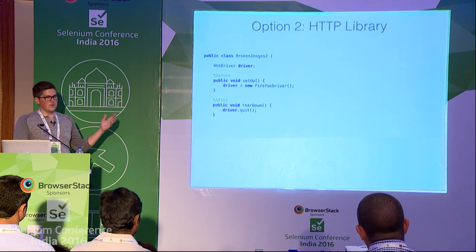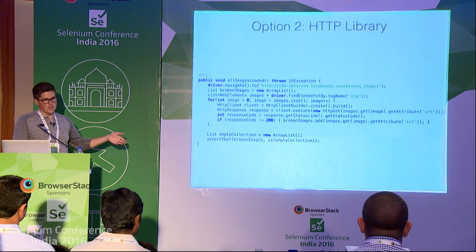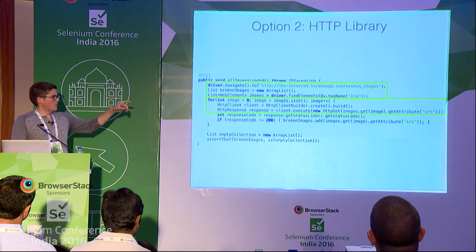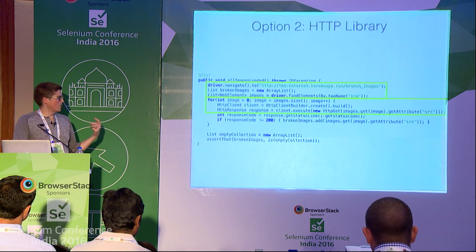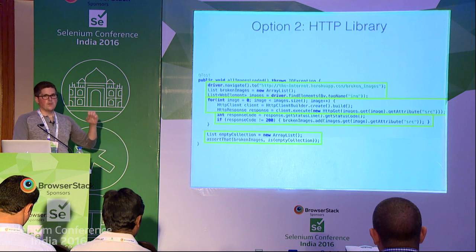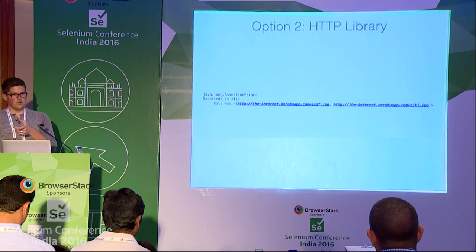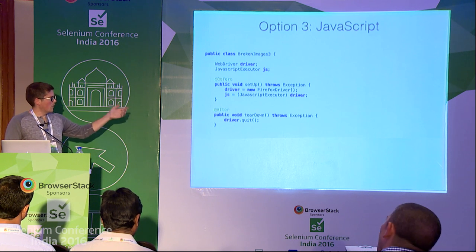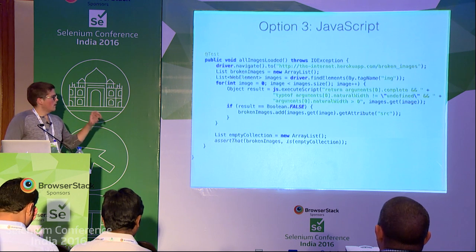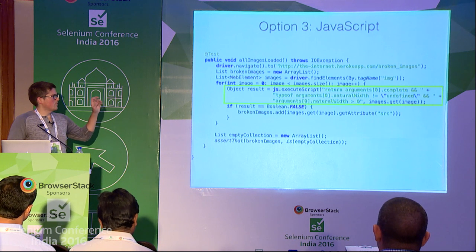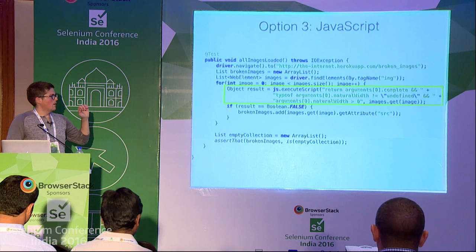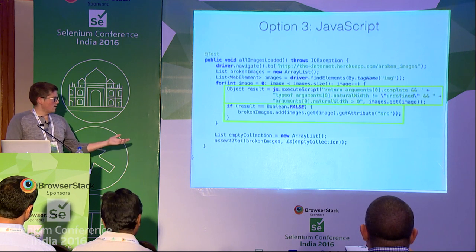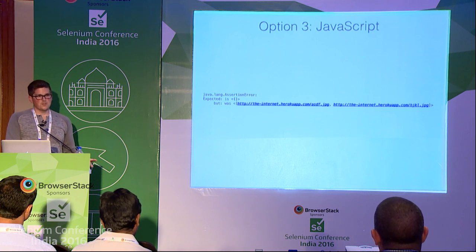With an HTTP library, it's a very simplistic setup with nothing special in setup and teardown. In the test method, in addition to finding the images, you use an HTTP library and loop through finding all ones with a non-200 status code. Then you do the same kind of assertion — empty collection versus broken image collection — and list the broken images in a single blow. So if there are 50 broken images, it'll list them all. For JavaScript: after creating a Selenium instance, cast it as a JavaScript executor, find the images, then execute JavaScript to check the natural width. If it's undefined or not complete, it's a broken image. Store those and do the same assertion. Of the three options, JavaScript is the best because there's no additional setup and no additional network calls — it just uses the JavaScript executor which comes out of the box with Selenium.